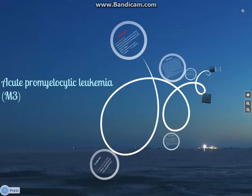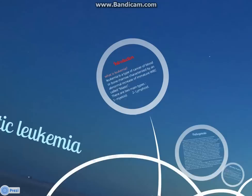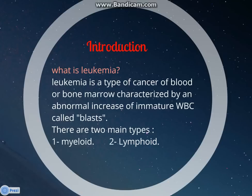Acute Promyelocytic Leukemia. We're going to give you a small introduction about leukemia in general. Leukemia is a type of cancer of blood or bone marrow, characterized by an abnormal increase of immature white blood cells. There are two main types of leukemia: myeloid and lymphoid leukemia.